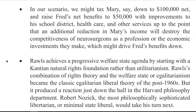In our scenario, we might tax Mary down to $100,000 net and raise Fred's net benefits to $50,000 with improvements to his school district, health care, and other services — up to the point that an additional reduction in Mary's income would destroy the competitiveness of neurosurgeons as a profession or the economic investment they make, which might drive Fred's benefits down. Rawls achieves a progressive welfare state agenda by starting with a Kantian natural rights foundation rather than utilitarianism. Rawls' combination of rights theory and the welfare state, or egalitarianism, became the classic egalitarian liberal theory of the post-1960s, but it produced a reaction just down the hall in the Harvard philosophy department — Robert Nozick, the most philosophically sophisticated libertarian or minimal state liberal, would take his turn next.